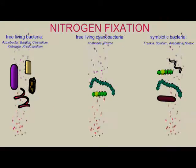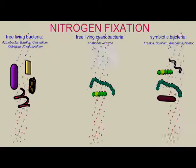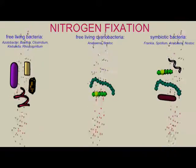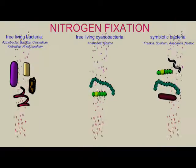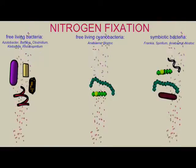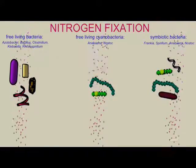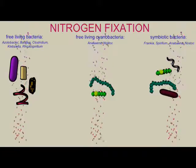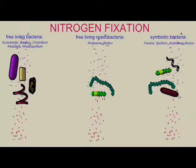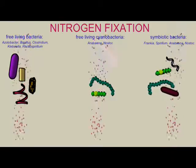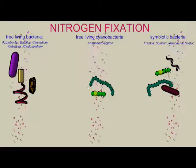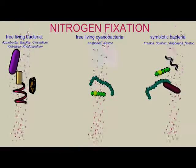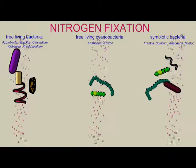Only certain bacteria possess the nitrogenase enzyme which can perform nitrogen fixation, such as Azotobacter, Bacillus, Clostridium, Klebsiella, and Rhodospirillum. Or the cyanobacteria Anabaena and Nostoc, which may have to protect the areas where nitrogen fixation occurs by making protective heterocysts.